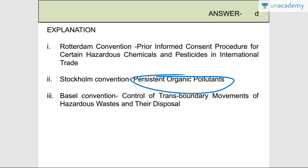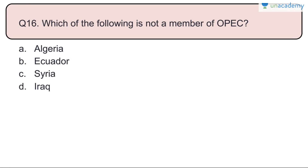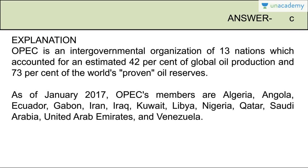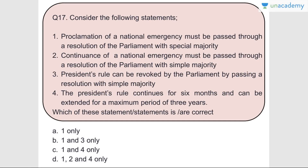Question number sixteen: Which of the following is not a member of OPEC? Algeria, Ecuador, and Iraq are all members of OPEC. Syria is not a member. Answer is C. OPEC is an intergovernmental organization of 13 nations accounting for 42% of global oil production and 73% of the world's proven oil reserves. As of January 2017, OPEC members include Algeria, Angola, Ecuador, Gabon, Iran, Iraq, Kuwait, Libya, Nigeria, Qatar, Saudi Arabia, UAE, and Venezuela.